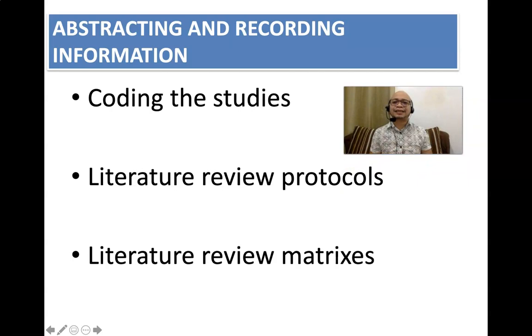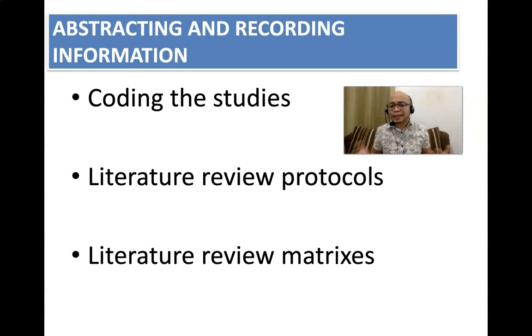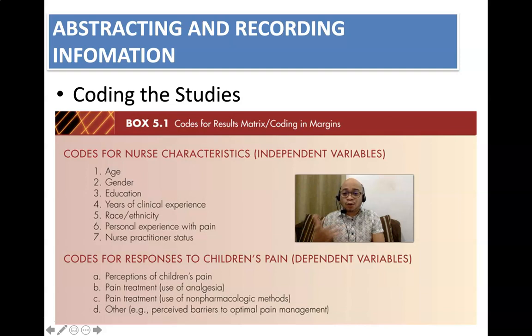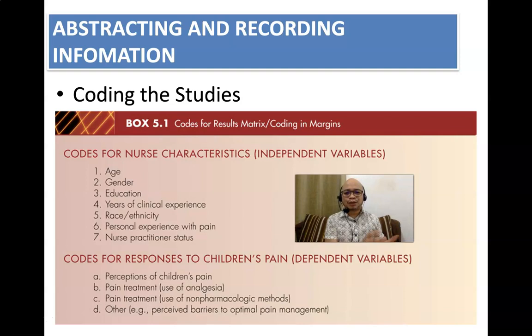In abstracting and recording the information, you need to code the studies. There are several ways of coding — it depends on how you will systematically organize the pertinent research articles you have downloaded. You can code them according to literature review protocols or literature review matrices. For example, you may code for independent variables, and then have another set of folders for literature pertaining to the various dependent variables of your study. There's actually no general rule. At the end of the day, the most important thing is how you will be able to systematically synthesize the literature, no matter what your coding is.